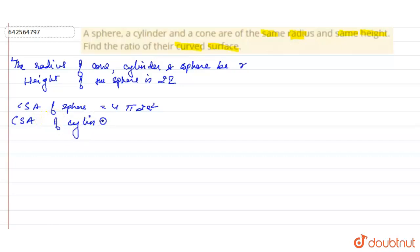And the curved surface area of cylinder is 2πR × 2R = 4πR². And this is because H = 2R, that's why we got this, right?